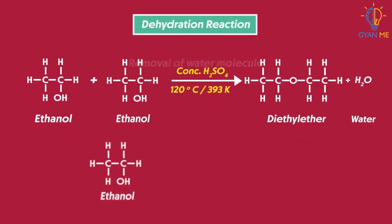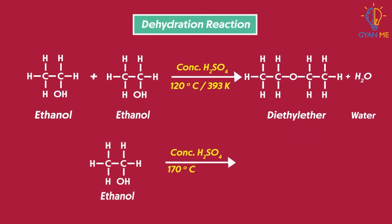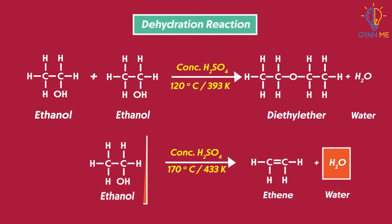If we heat this same mixture up to 170 degrees Celsius or 443 Kelvin and add excess of sulfuric acid, then it will form the unsaturated hydrocarbon ethene. Here, one molecule of ethanol gets dehydrated instead of two.